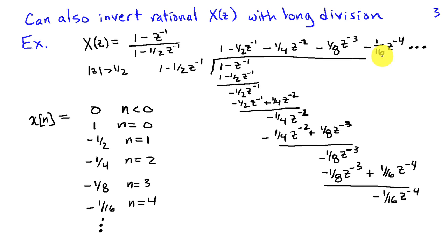And from this power series, we can pick off the coefficients and we see that x of n is 0 for n less than 0. It's 1 when n equals 0, minus 1 half when it's 1, minus 1 quarter when it's 2, minus 1 eighth when it's 3, and so on.